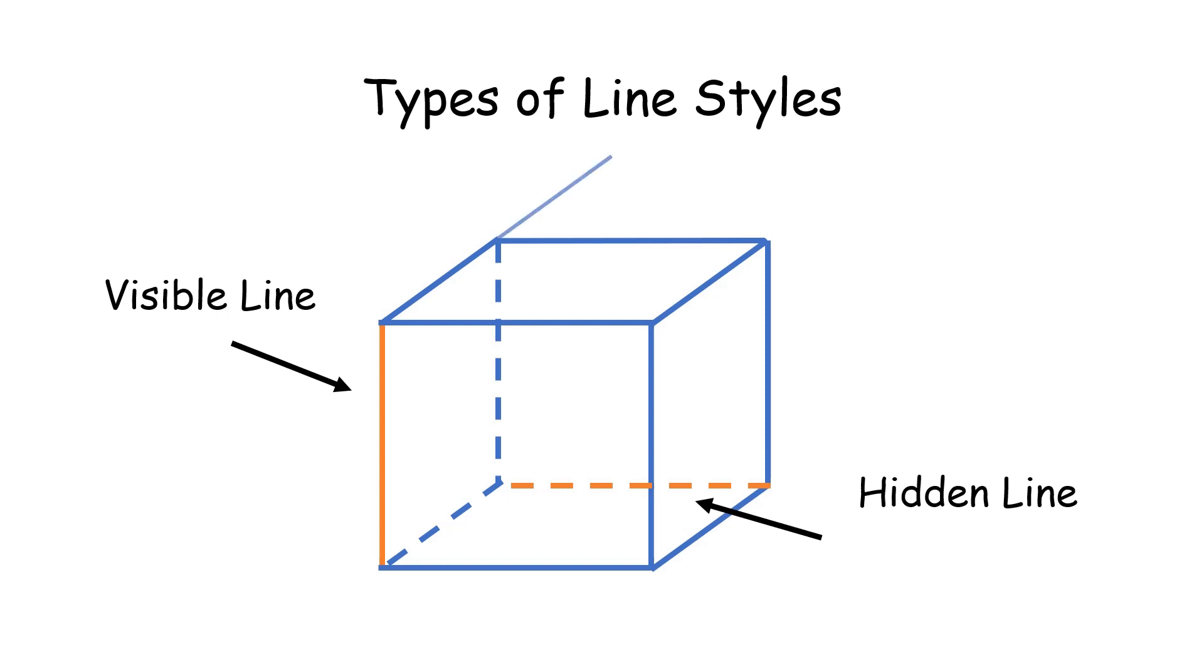And let's say we had some guidelines over here. So these would be the thin continuous line. And what if we had a circle on the cube? Whenever we have circles we will need center lines as well. So these would be called the center lines.